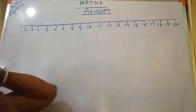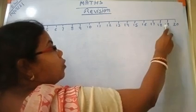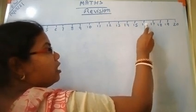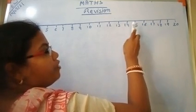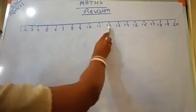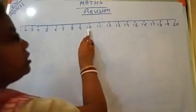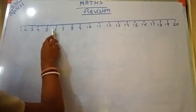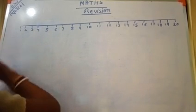But when we are counting the numbers from the back side: 20, 19, 18, 17, 16, 15, 14, 13, 12, 11, 10, 9, 8, 7, 6, 5, 4, 3, 2, 1.